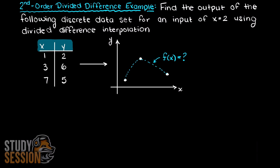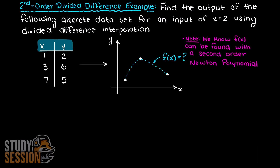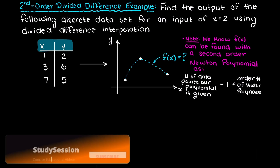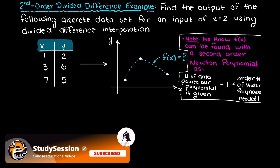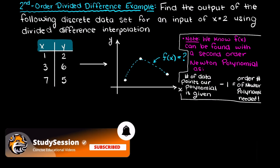Our first thing to do when solving this problem is determine what order Newton interpolating polynomial we will be solving. As we learned before, interpolating polynomials must always pass through every data point supplied to them. Therefore, our Newton polynomial will always be an order of n minus 1, where n is our number of data points. Therefore, in this problem, since we are supplied 3 data points, we are being asked to solve for a second order divided difference.